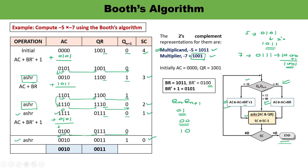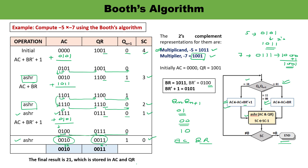The sequence counter has reached 0, so the program ends. The result is available in AC and QR registers. Reading out the combined value: AC=0010, QR=0011, giving 00100011 in binary, which equals 32 + 2 + 1 = 35. So minus 5 times minus 7 equals 35, which is the correct result. Thank you so much for watching this video.